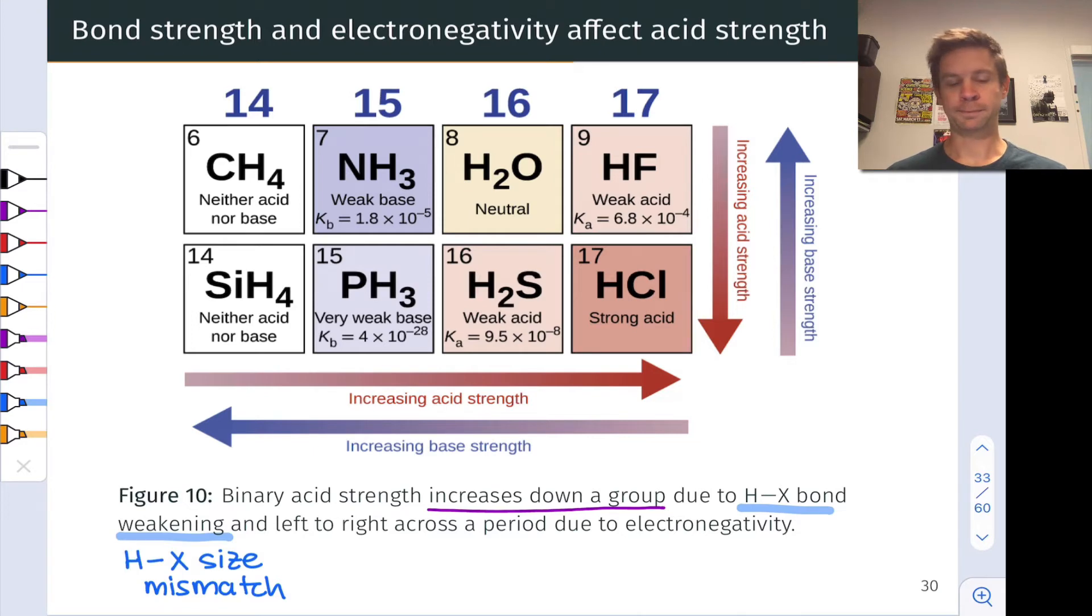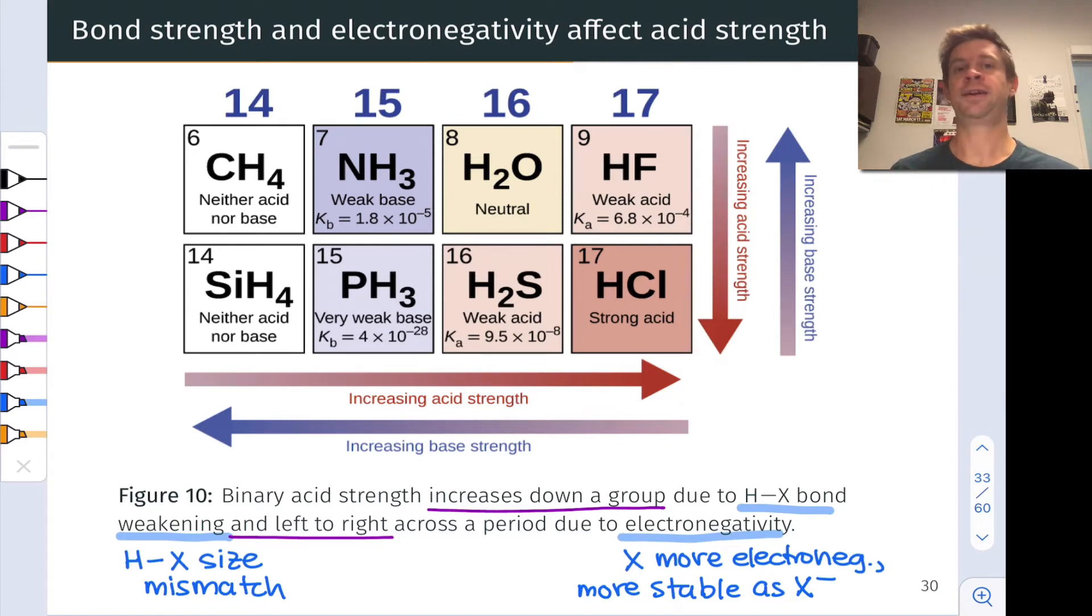Left to right across a period, we already know from prior discussions of periodic trends that electronegativity increases. The X atom tends to want to hold on to electrons more and tends to be more stable with an excess of electrons. In other words, with negative charge. What this does is create a situation where as we move left to right, X minus the conjugate base of the binary acid HX becomes more stable. And thus, dissociation of HX to form H3O plus and X minus becomes more thermodynamically favorable, and the acid becomes more acidic as we move left to right. It's all based on electronegativity looking left to right across the periodic table.